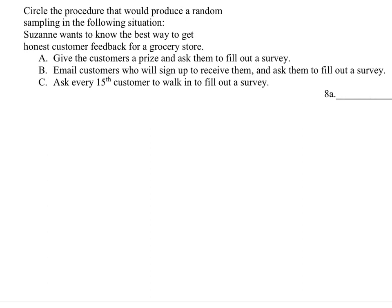Asking every 15th customer is extremely random, so we would choose C right here. Because we don't know what the 15th person is going to be — their age, gender, race, whatever affiliations. It is non-discriminate. We don't know if they usually shop at this place or some other place. So C is the correct answer.